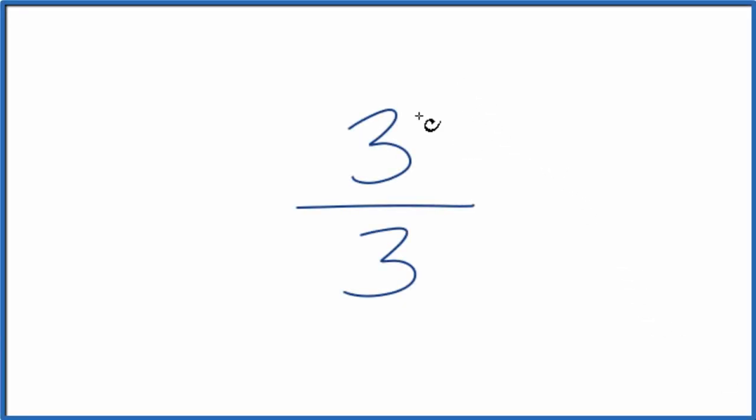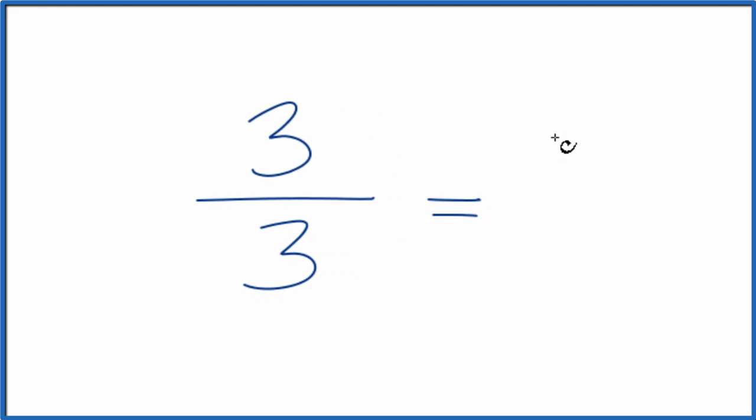Let's look briefly at how we might simplify the fraction 3 over 3. So the first thing that you want to realize is this means 3 divided by 3. How many times does 3 go into 3? And 3 divided by 3, that's just 1. So we could simplify the fraction 3 over 3 down to 1.